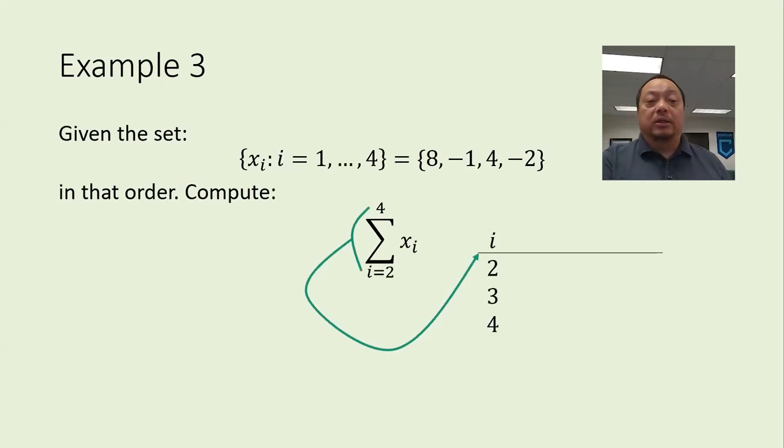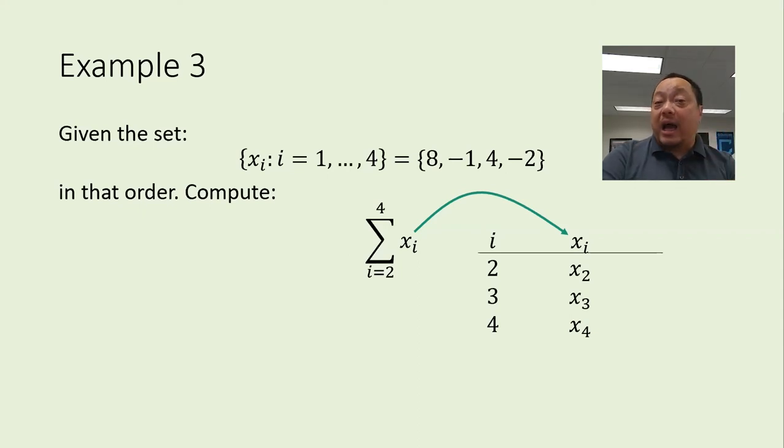Same approach as before. The index is i, and it goes in this column from 2 to 4. The computation goes here, and it's x sub i, so it goes like this, x sub 2, x sub 3, x sub 4. Note that the notation says to start with i equals 2, so we don't bother with x sub 1. We skip that number on the list because the sigma notation says so. We can't add yet. We need to fill in with numerical values first. X sub 2 is the second number on the list, so it's equal to negative 1. Now the rest of the x's. There. Now we're ready to add. The sum is 1.